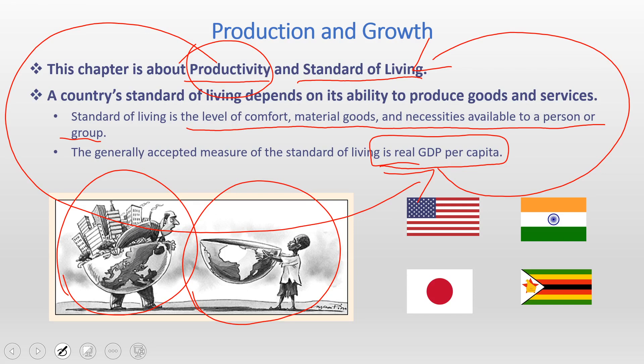Poor standard of living countries like India, Zimbabwe, or other African nations don't have high GDP per capita, so their standard of living is also low. The majority of the population don't have a car, and even if they have a house it's not a good one. They also lack access to education — they are poor.